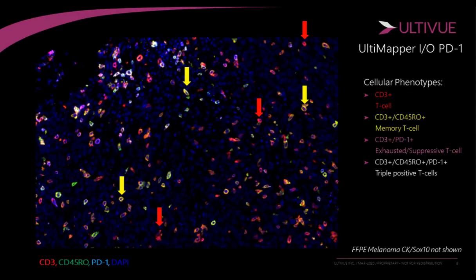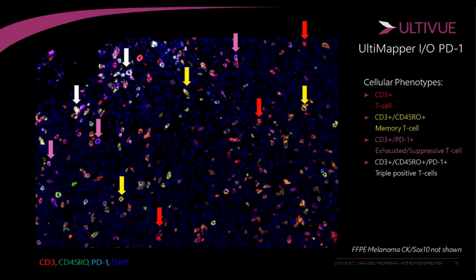Here we're seeing some dual positive CD3 and CD45 RO memory T cells. When you stack two colors on top of each other, you can get new colors — for example, red and green yields yellow, presenting a co-localization of two markers. We're also seeing exhausted suppressor T cells that are CD3 and PD-1 positive in a pink to purple color, and triple positive cells shown in white. You'll also see cells of different color variations showing qualitative dynamic range — low, medium, and high expressors — which you can further threshold in analysis tools.